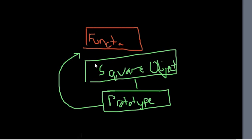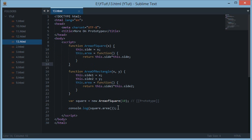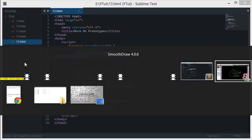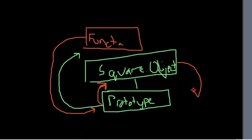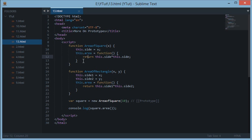The AreaOfSquare function looks at its methods and says yes, I do have it. It then returns that method down the prototype chain to the square object, which then console logs the result.